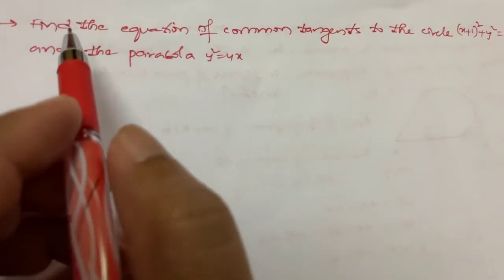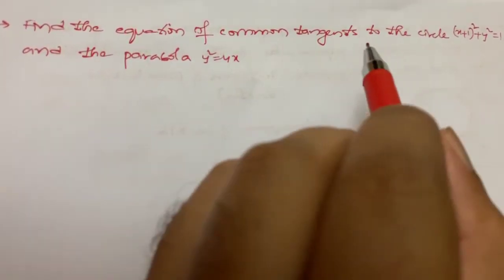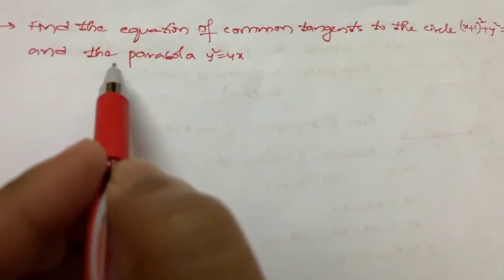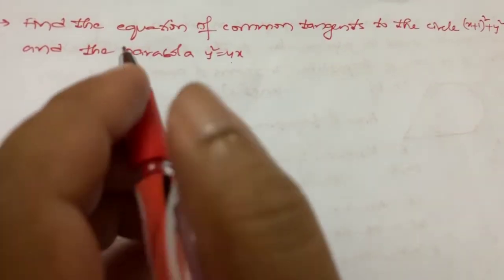Let us look at this problem. Find the equation of common tangents to the circle (x+1)² + y² = 1 and the parabola y² = 4x.